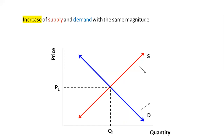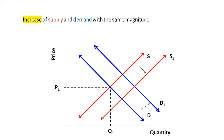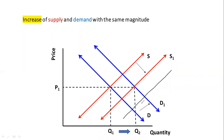In the longer term, what happens if both supply and demand change in the same direction? If demand shifts right due to income or preferences, and supply also increases, and if both increase with the same magnitude, the price level will be stable and the quantity will increase. But if supply shifts more, you will find lower prices.